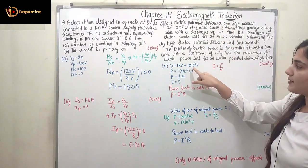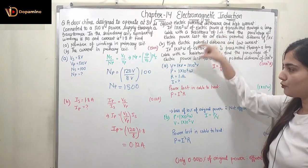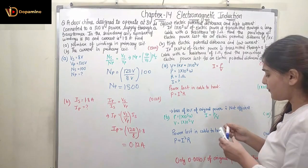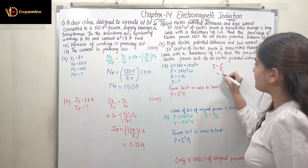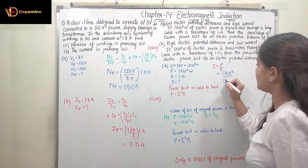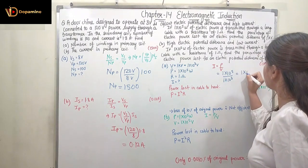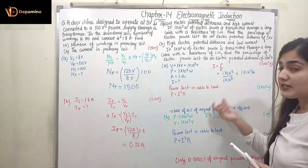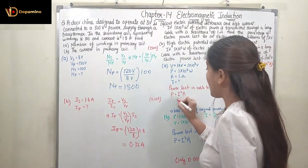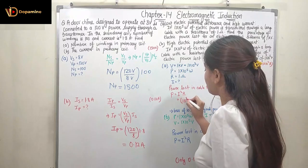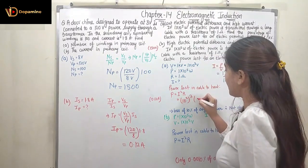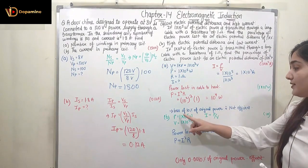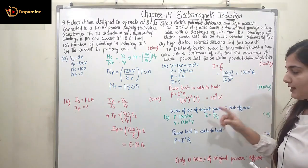In Case 1, V = 1×10³ volts and P = 1×10⁵ watts. Using I = P/V, current I = 1×10⁵ / 1×10³ = 1×10² ampere. Power lost as heat in the cable = I²R = (10²)² × 1 = 10⁴ watts. This is a very high loss — around 10% of the original power — so it is not efficient.